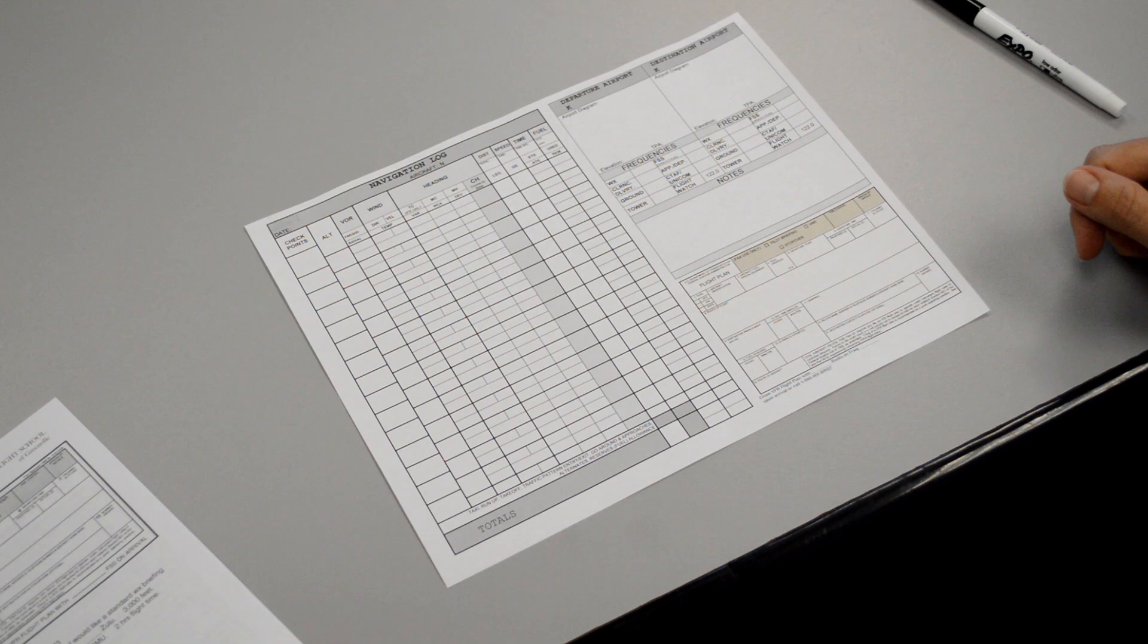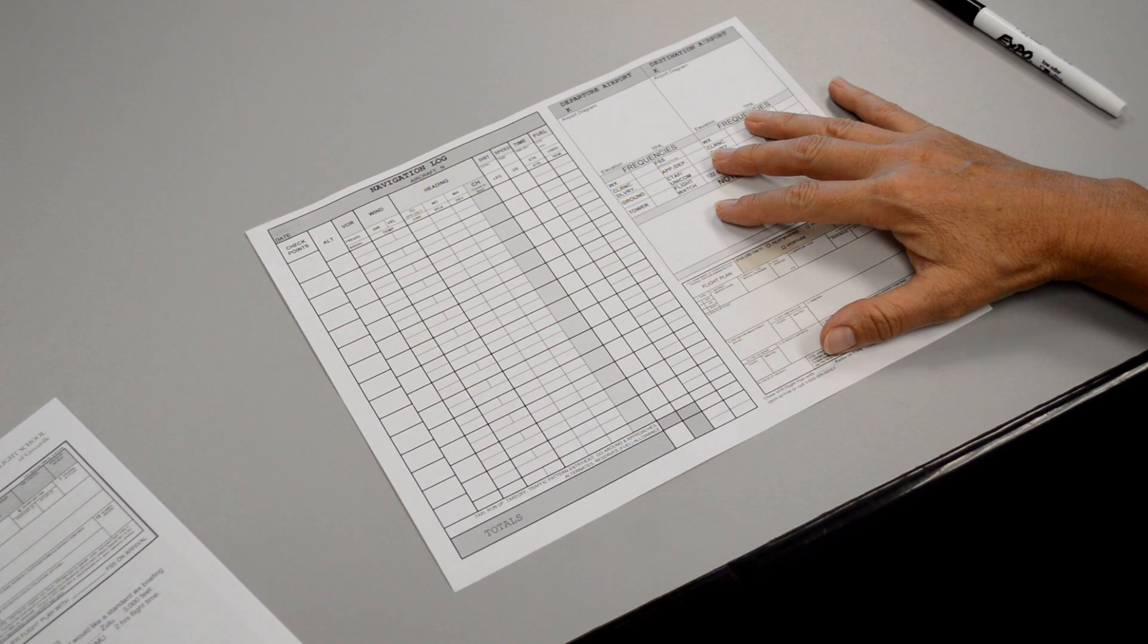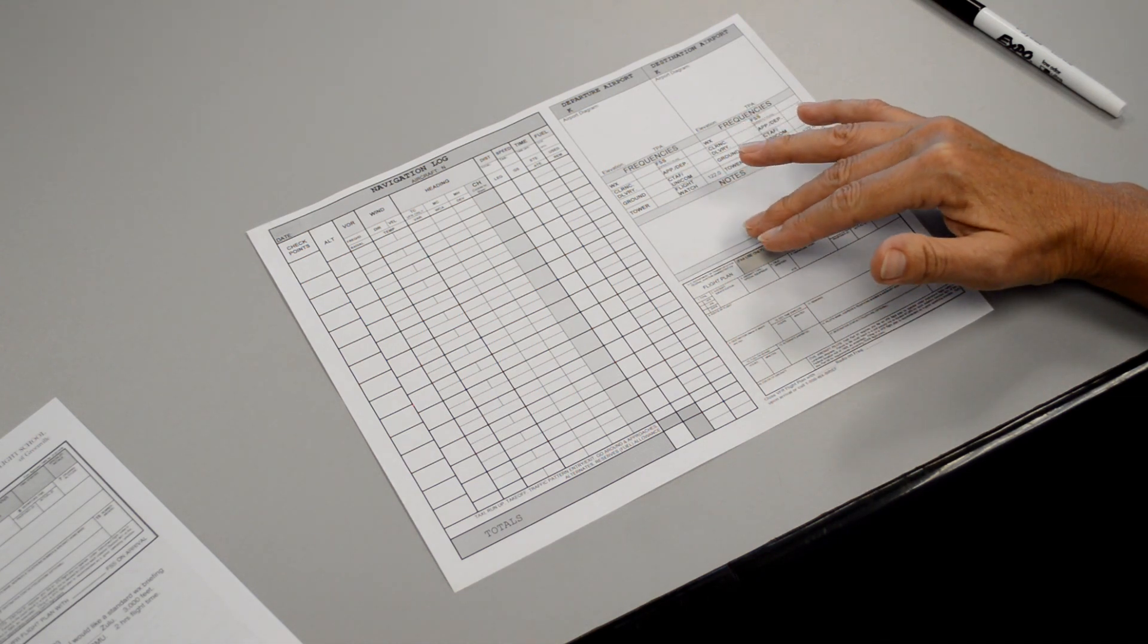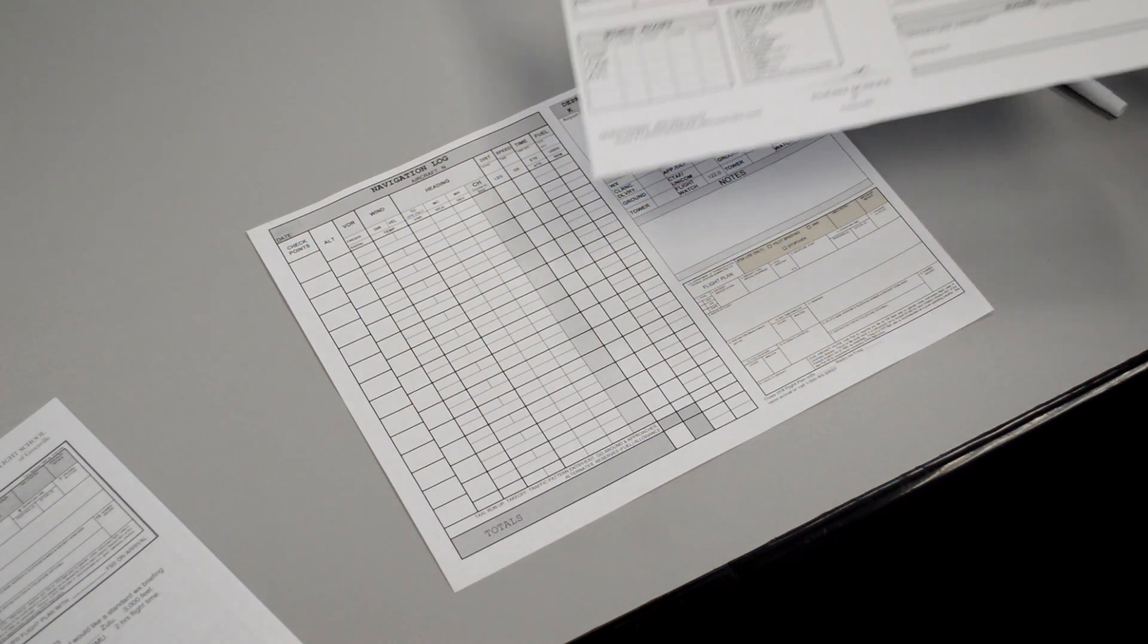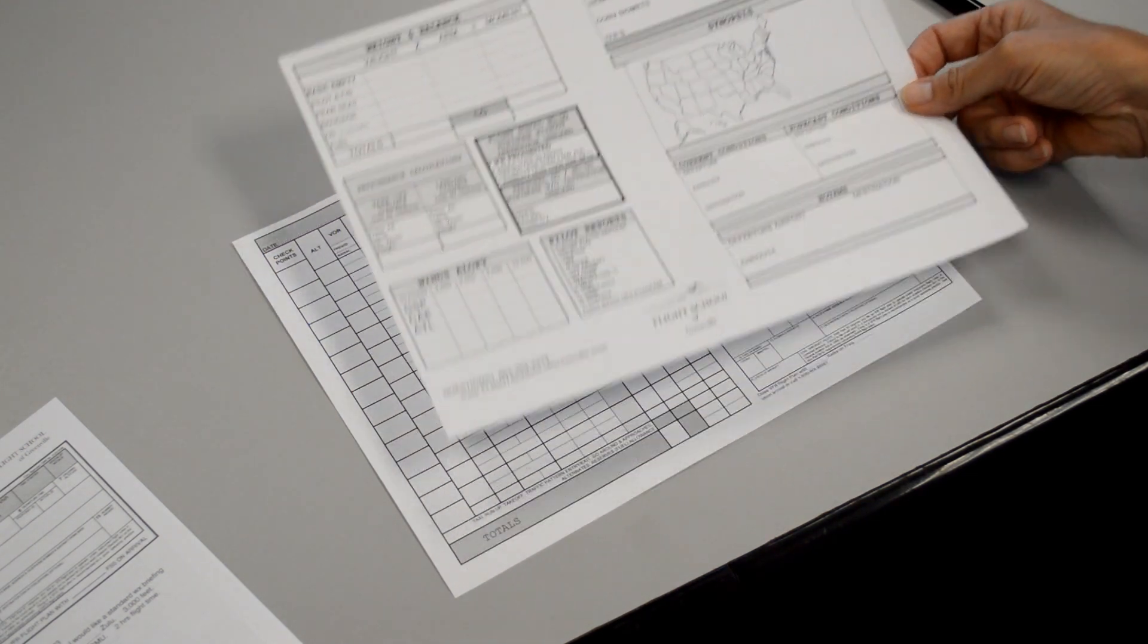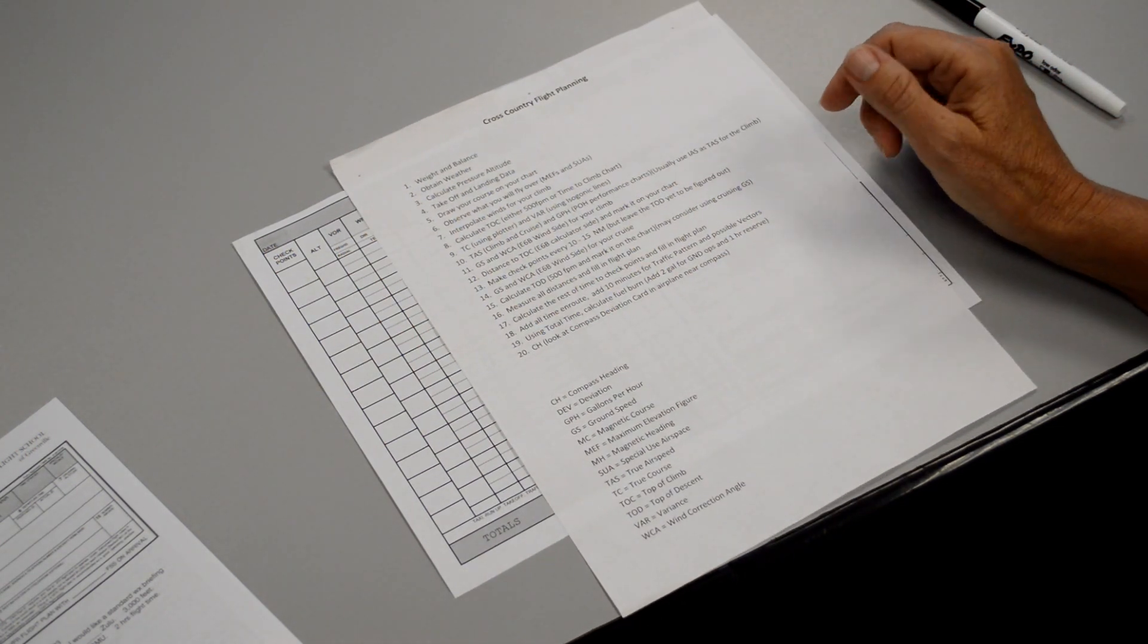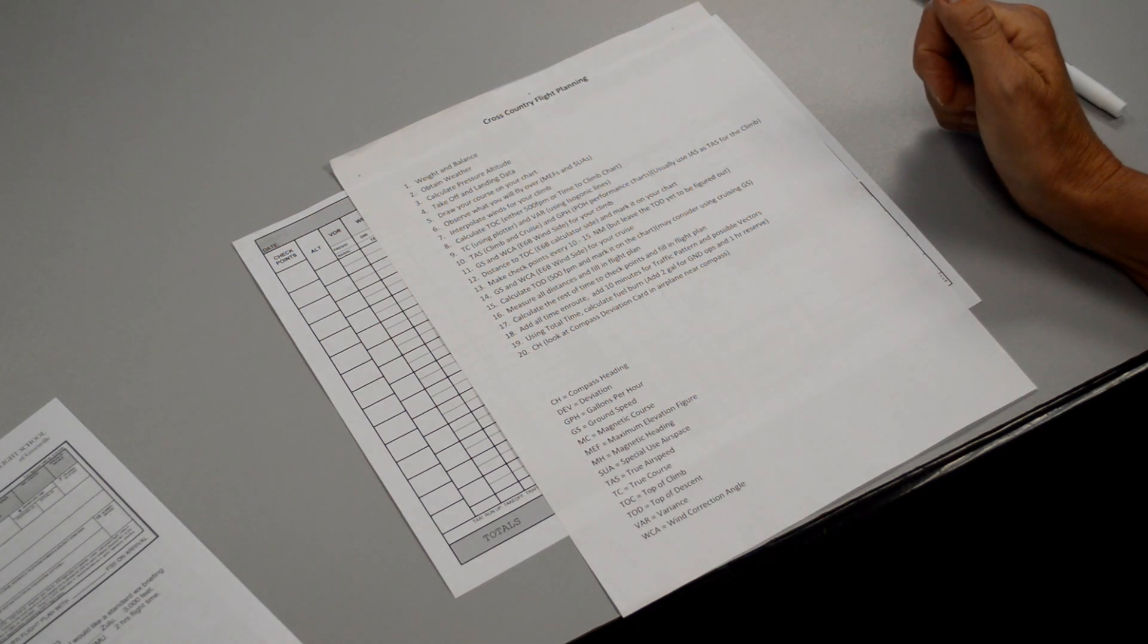There are many steps to cross-country flight planning and it's easiest if you use some sort of navigation log as you see here. The navigation log allows you to write in your checkpoints, write down the winds to help you calculate out the distance, speed, and time and fuel burn between each checkpoint. In addition, you're going to want to be able to calculate out the weight and balance and then take off and landing distance data and write down all your weather. Because there are so many steps involved in cross-country flight planning, I've made out a 1 through 20 step-by-step that we'll use to calculate out our cross-country flight plan from Greenville, South Carolina to Columbia, South Carolina.